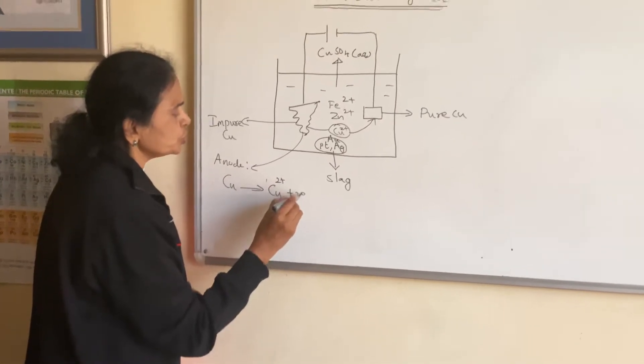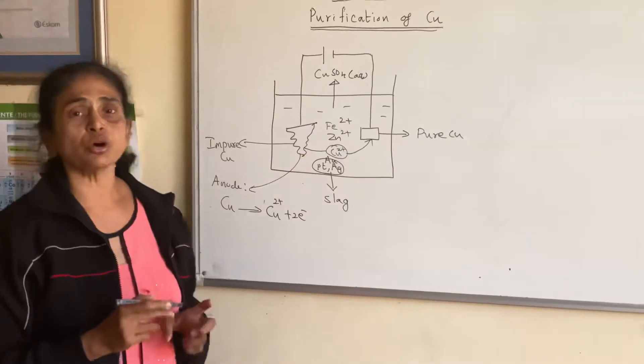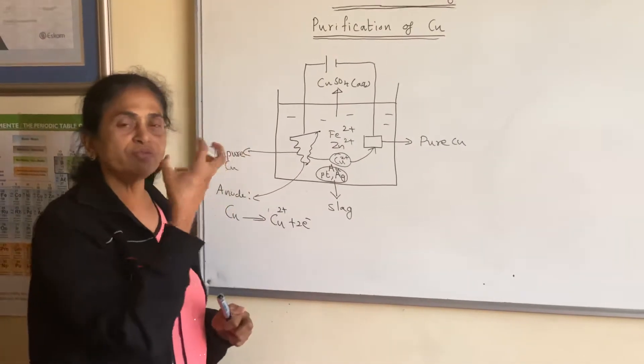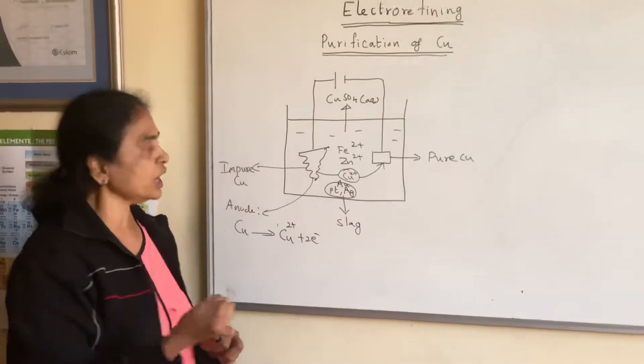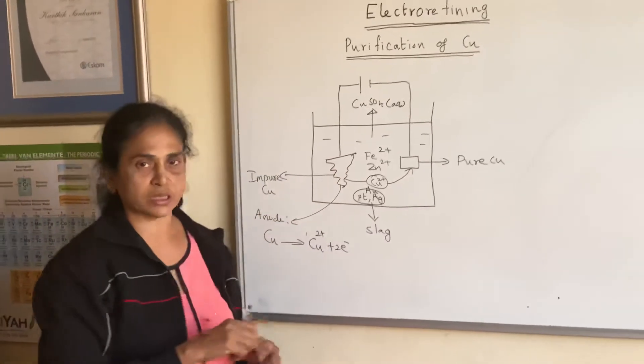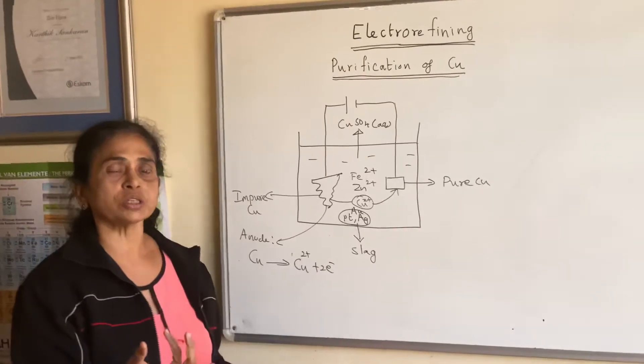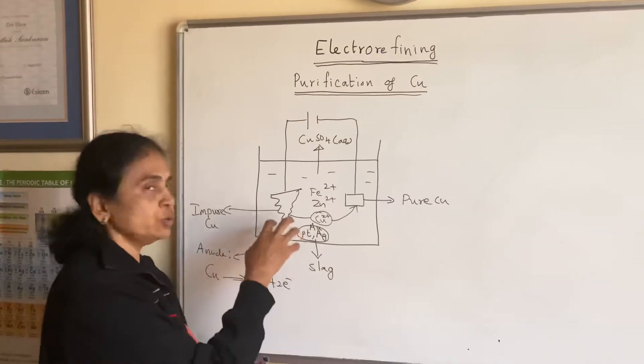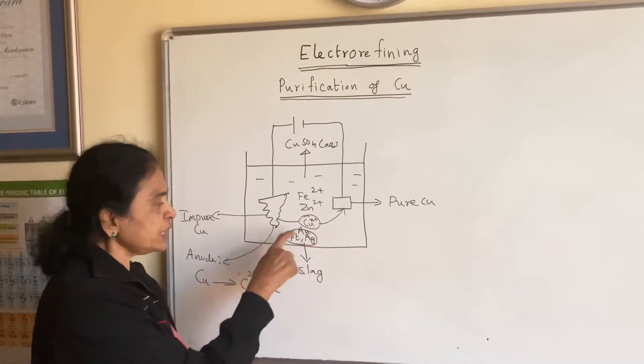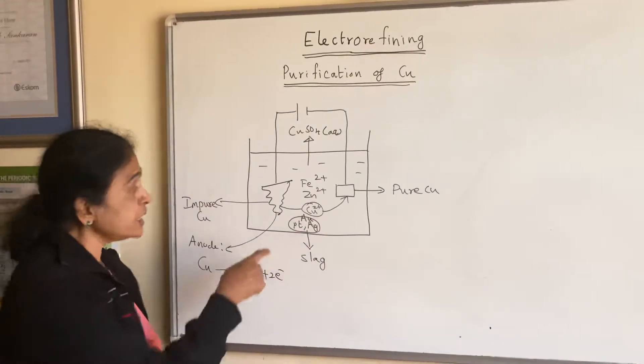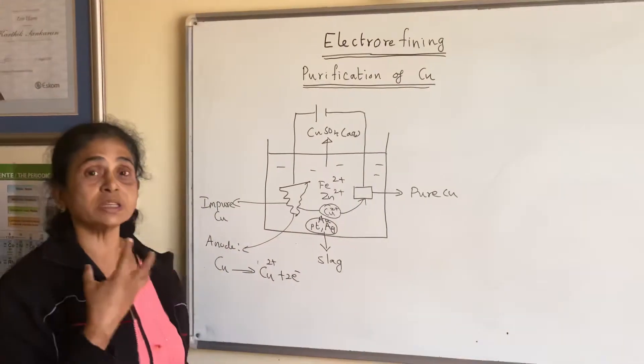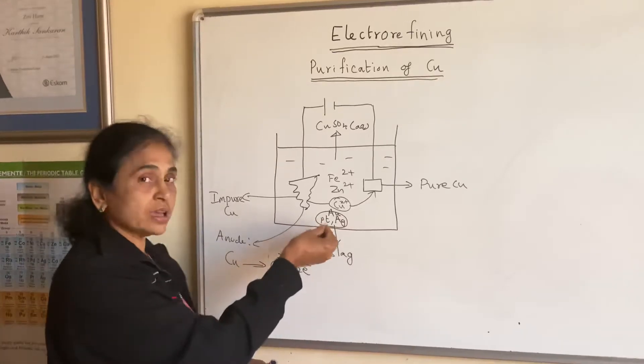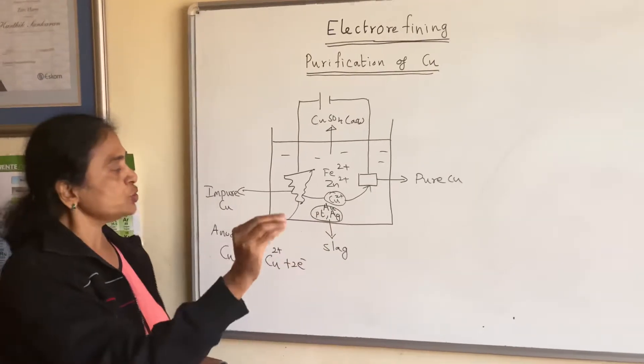But there could be various weak reducing agents. Those metals present cannot undergo oxidation because they are weak reducing agents. So what will they do? They will come out from that one and remain as slag. And this slag is expensive because it has got expensive metals which can be sold and it can have an economical value.